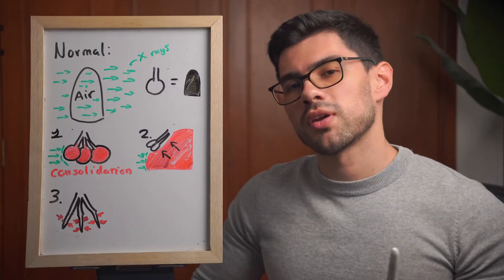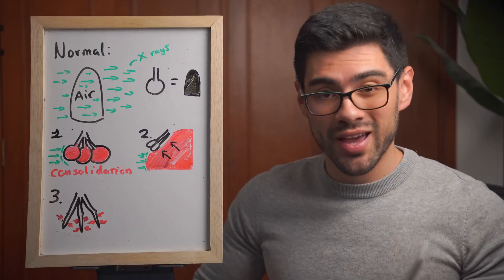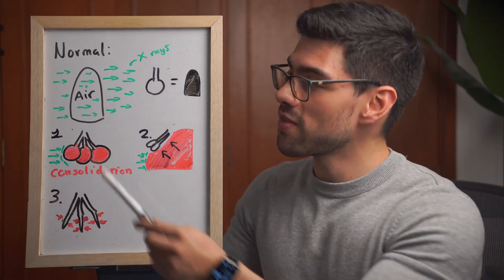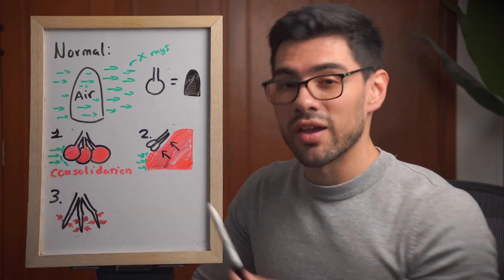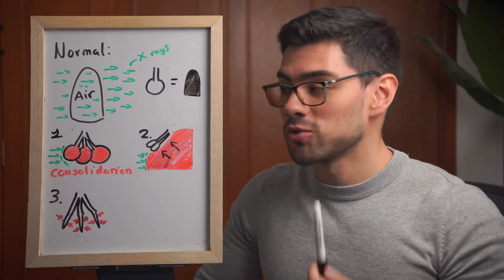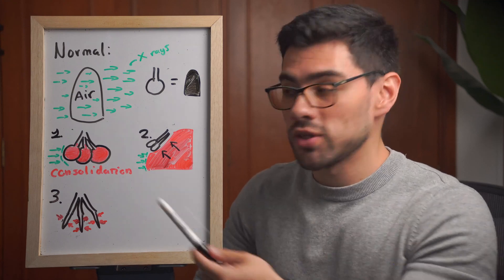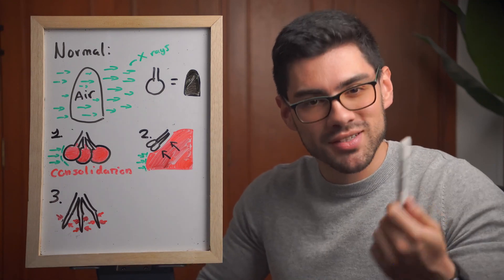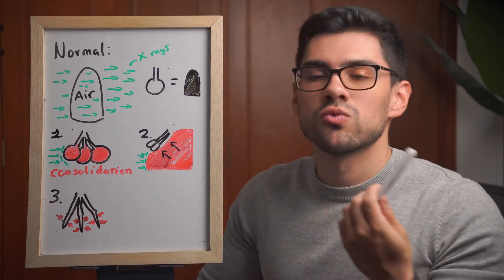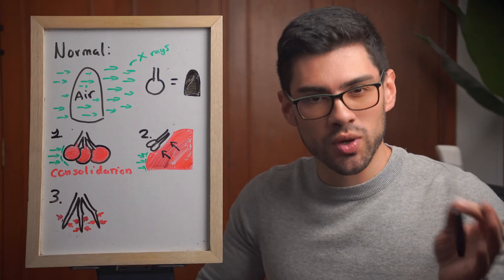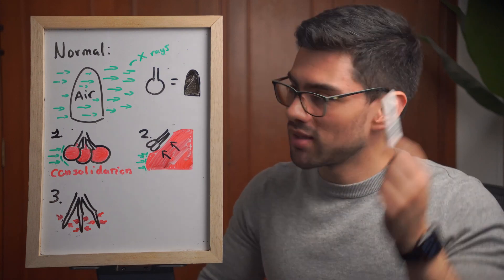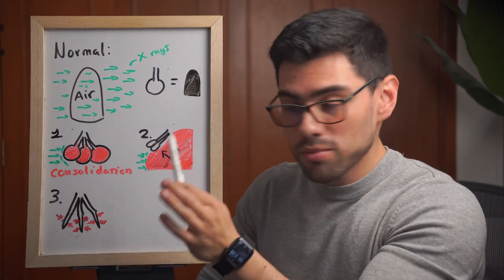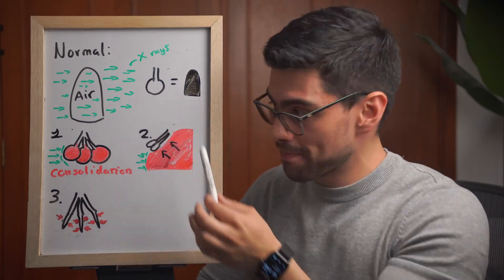To understand the three main causes, we first need to remember that in a normal X-ray, the lungs look black because they are filled with air. Air allows most X-rays to pass through, and that makes the image look black — or radiolucent, to use the proper term. So we make that association: lungs filled with air, image looks black.